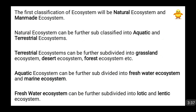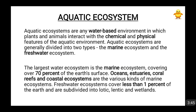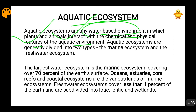Moving forward, the division of natural ecosystems into aquatic and terrestrial has been discussed. The aquatic ecosystem, as the name suggests, is a water-based environment where plants and animals interact with the chemical and physical features of the aquatic environment. These aquatic ecosystems are basically of two types: marine ecosystem and freshwater ecosystem.